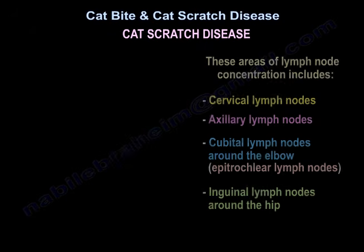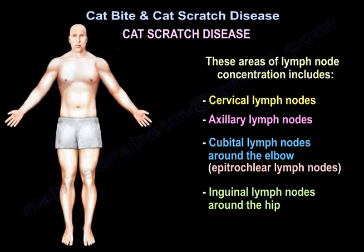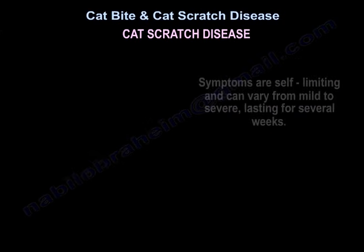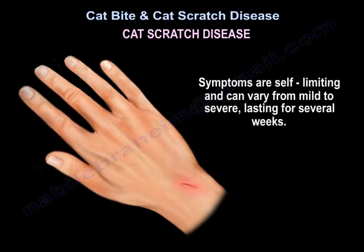Areas of lymph node concentration include cervical lymph nodes, axillary lymph nodes, cubital lymph nodes around the elbow (called epitrochlear lymph nodes), and inguinal lymph nodes around the hip. Symptoms are self-limiting and can vary from mild to severe, lasting for several weeks.